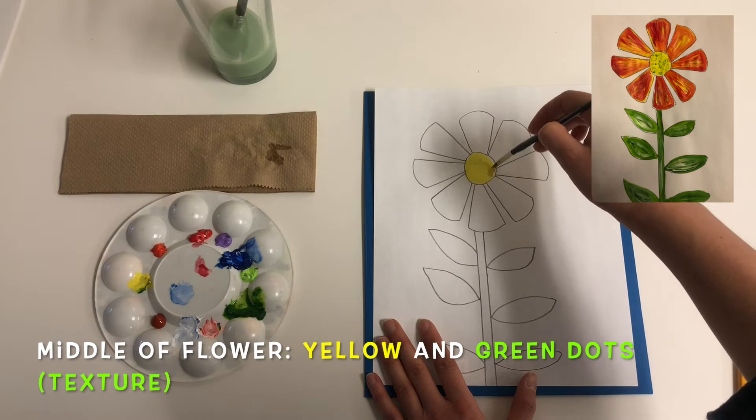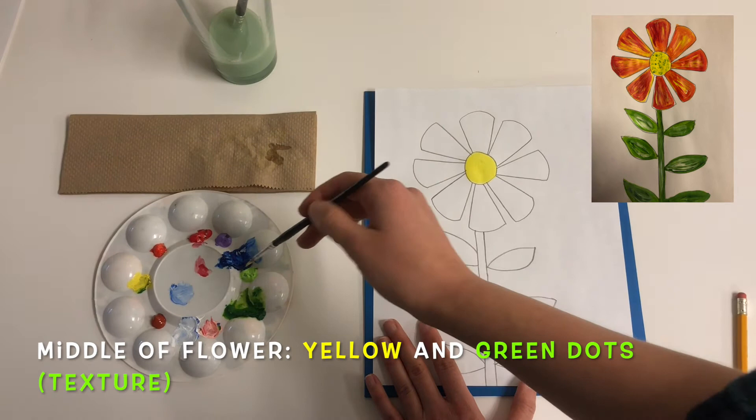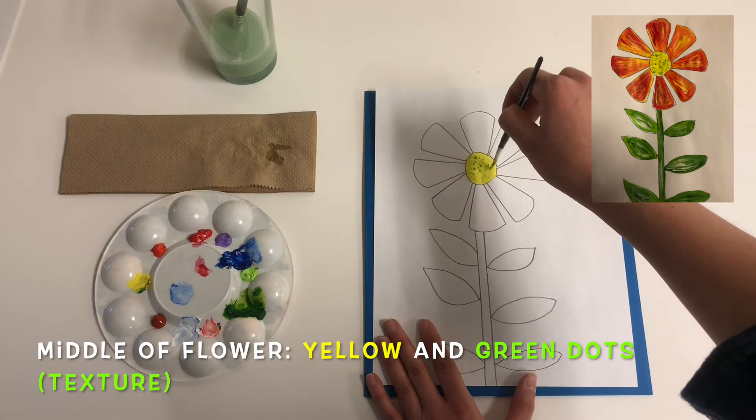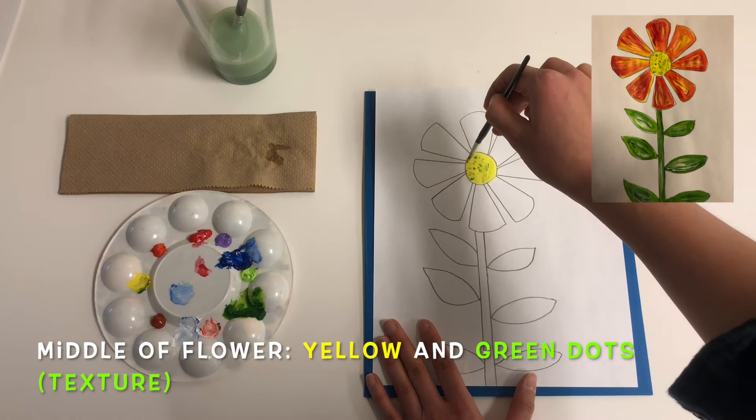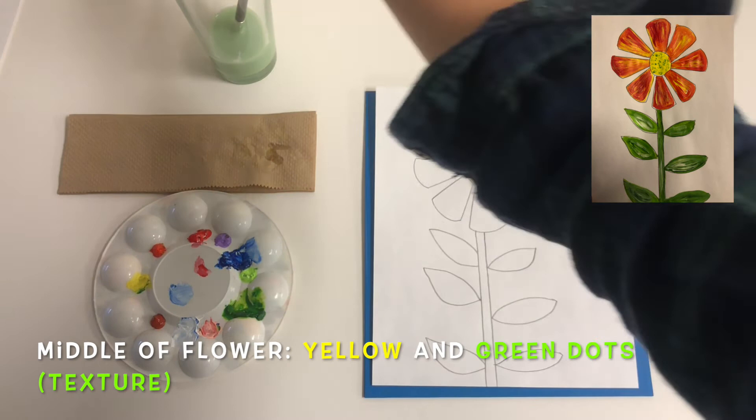Now, in Eric Carle's paintings and drawings, when he created his flowers, he created them with the yellow middle and then he also took a little tiny bit of green and put some dots of green throughout the middle of the flower. So, go ahead and just take a tiny dot of green paint and put some dots in the middle of your flower. We can still see the yellow though, so don't cover all of the yellow up.